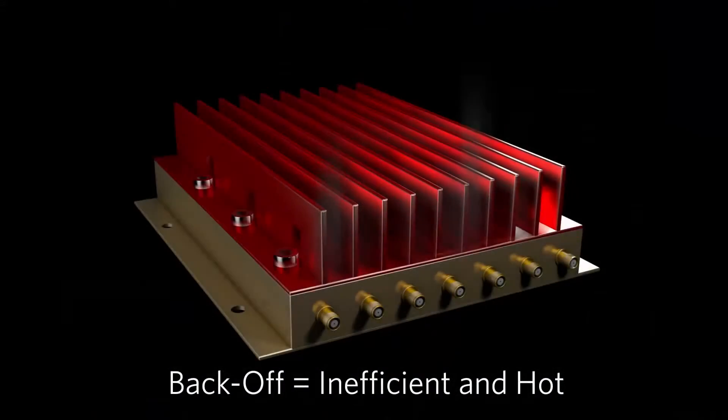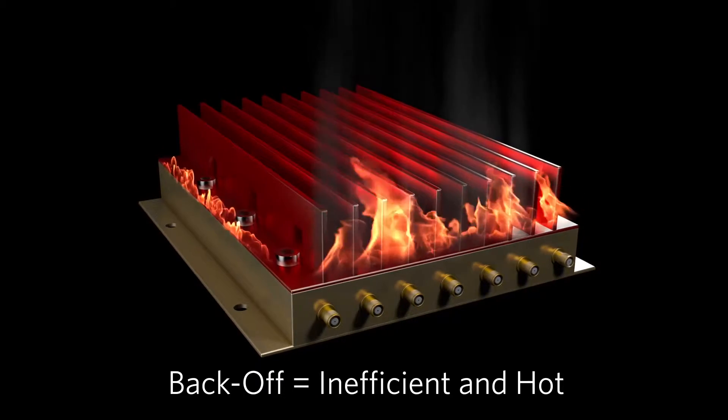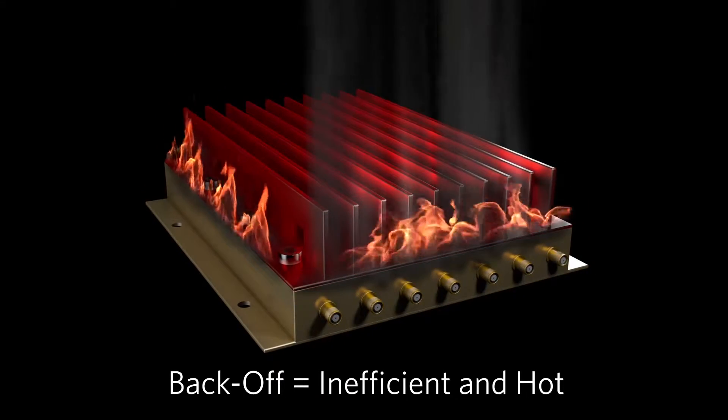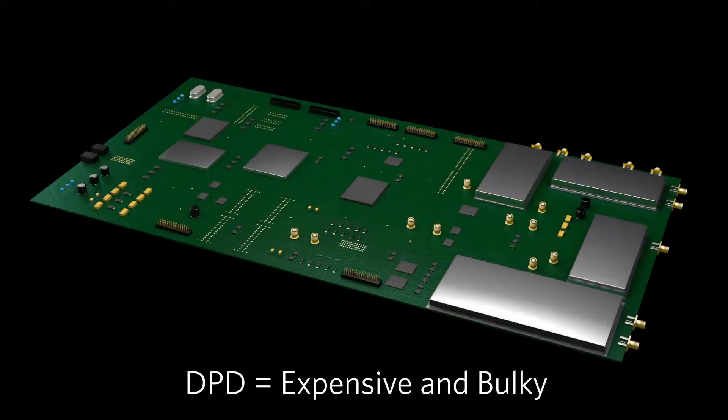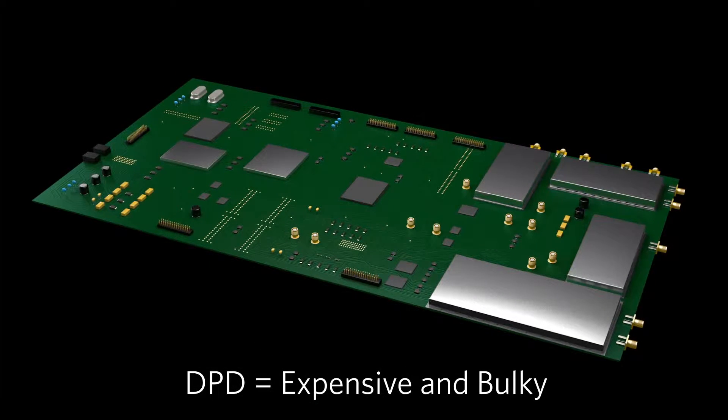In order to meet the requirements of the HETnet, designers could either operate their PAs in back-off at the cost of low efficiency and heat, or use DPD solutions, which are expensive and bulky.